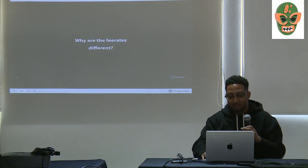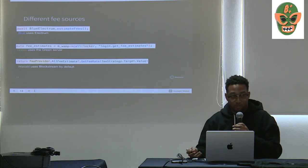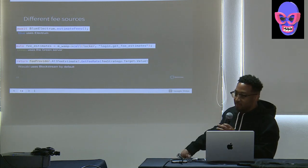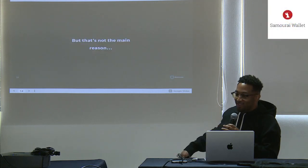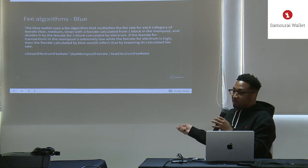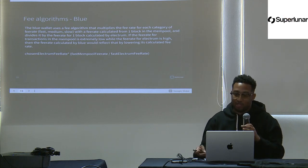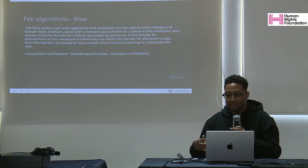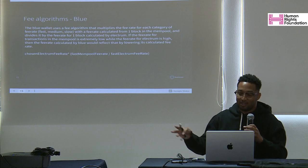Why are the fee rates different? Naively you might assume they're using different fee sources — and they do. Blue uses Electrum, Green uses the Green server, and Wasabi uses Blockchain.info by default. But that's not the main reason. They actually use different algorithms. Blue's fee algorithm multiplies the fee rate for each category — fast, medium, and slow — with the fee rate calculated from one block of mempool, and divides it by the fee rate for one block calculated by Electrum.